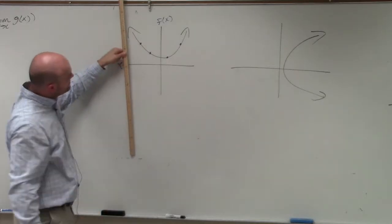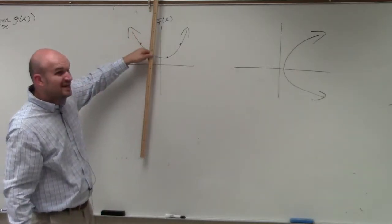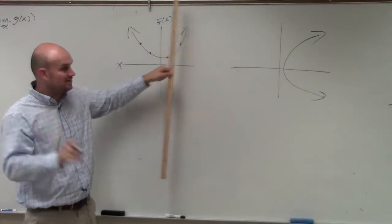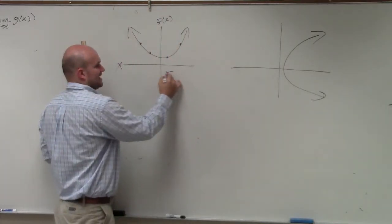So as I move this vertical line across, you guys can see that I only cross the graph once. Meaning, for each x value, there's exactly one y value. Meaning, this is a function.